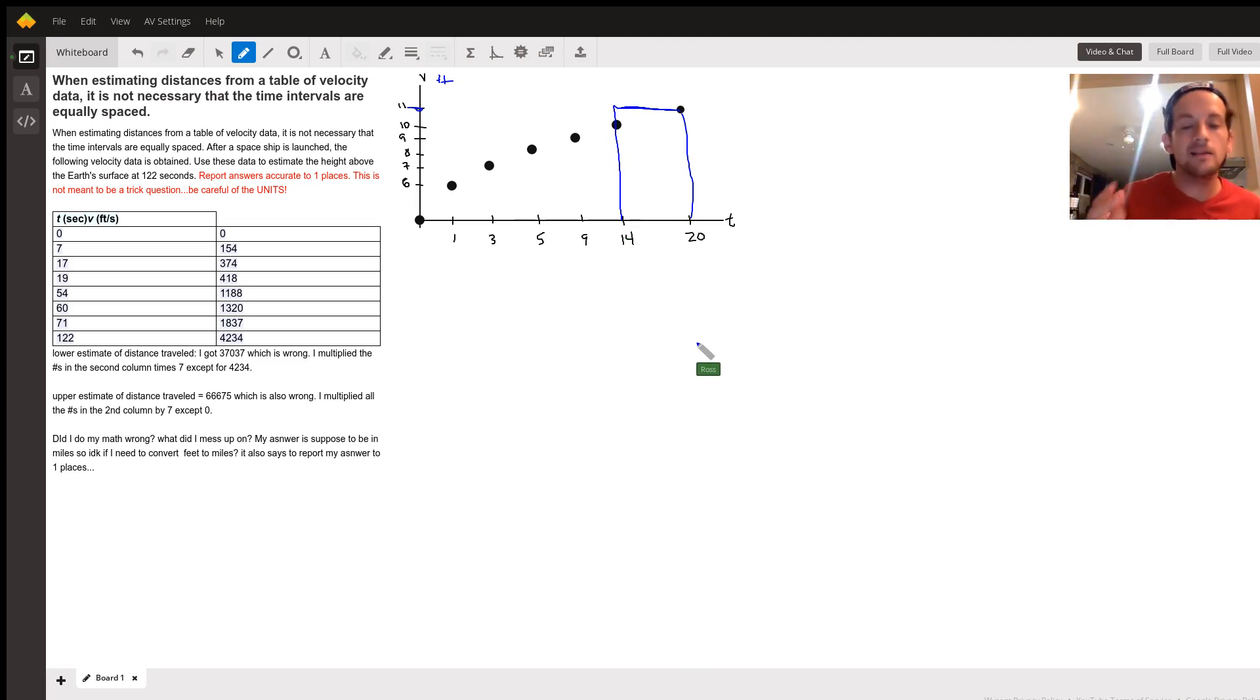Now what that's technically saying, what I'm saying by drawing that rectangle is, I'm assuming that the velocity of this object from seconds 14 to 20 was 11 the whole time, which it wasn't. We know that, but to get an estimate that's what I'm assuming. And then I multiply the length and the width. So I know that the width here is 11 and the length is 6 because from 14 to 20 is 6. So multiplying those, I would get 66.